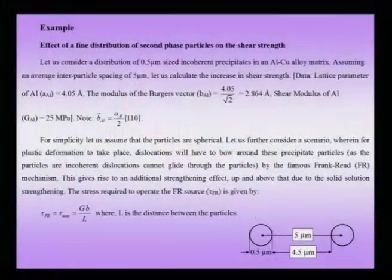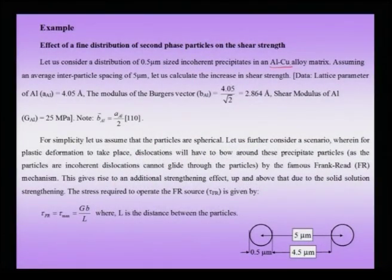Next, let us take up an example of the interaction of two kinds of defects, where this interaction serves as an engineering application to strengthen the material. Suppose I take an aluminium crystal — aluminium has an FCC lattice and is typically very ductile but very weak, so it is not suitable directly for structural applications. Such a crystal can be strengthened by adding an alloying element; in this case, you can make an aluminium-copper solid solution. Further strengthening comes from precipitating certain precipitates in the aluminium-copper system through a solutionizing treatment followed by an aging treatment, which produces a fine distribution of precipitates giving enhanced strength.